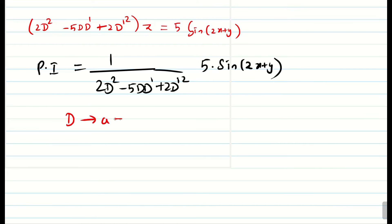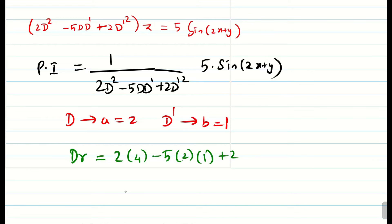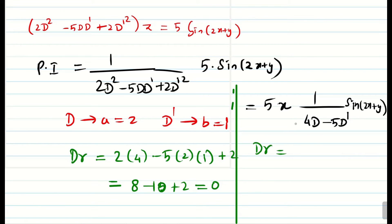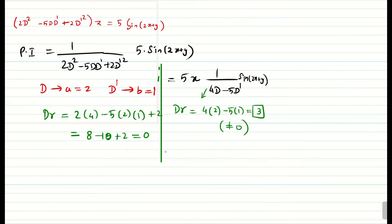PI = 1/(2d² - 5dd' + 2d'²) · 5·sin(2x + y). Replace d by a = 2 and d' by b = 1. Denominator: 2·(4) - 5·(2)·(1) + 2·(1) = 8 - 10 + 2 = 0. Since the denominator is zero, we pre-multiply by x and differentiate the denominator partially with respect to d, giving 4d - 5d'. Now recalculate: 4·(2) - 5·(1) = 8 - 5 = 3, which is not zero.